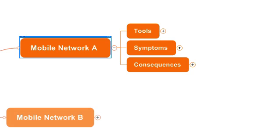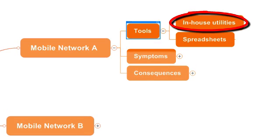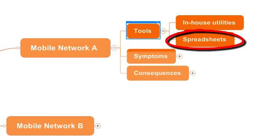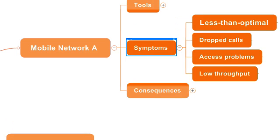In Network A, they rely on in-house utilities that are okay but only solve one part of the equation, so they often analyze cell data spreadsheets directly. When you have rows and columns of numbers in front of you, it is easy to make a mistake. At best, RF optimization is done through a time-consuming, tedious, and error-prone process. As a result, their network is not fully optimized.